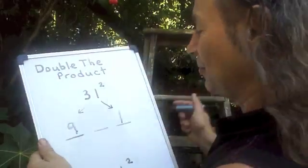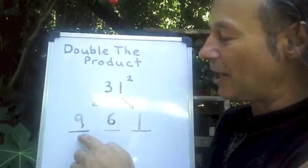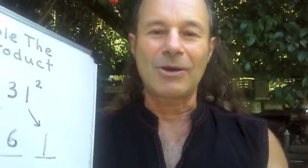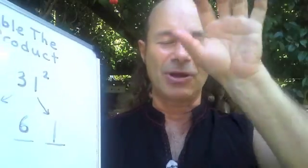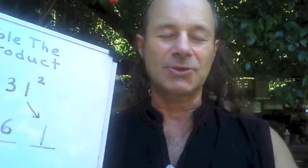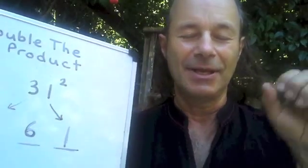So we put the 6 in the middle here, so we get the final answer is 961. Suppose to do that as a mental one-line answer. In my inner mental screen we've got 31 squared. We say square the 1, square the 3, so we've got 9-1. But in the middle, double the product is double 3 is 6, so the answer is 961.